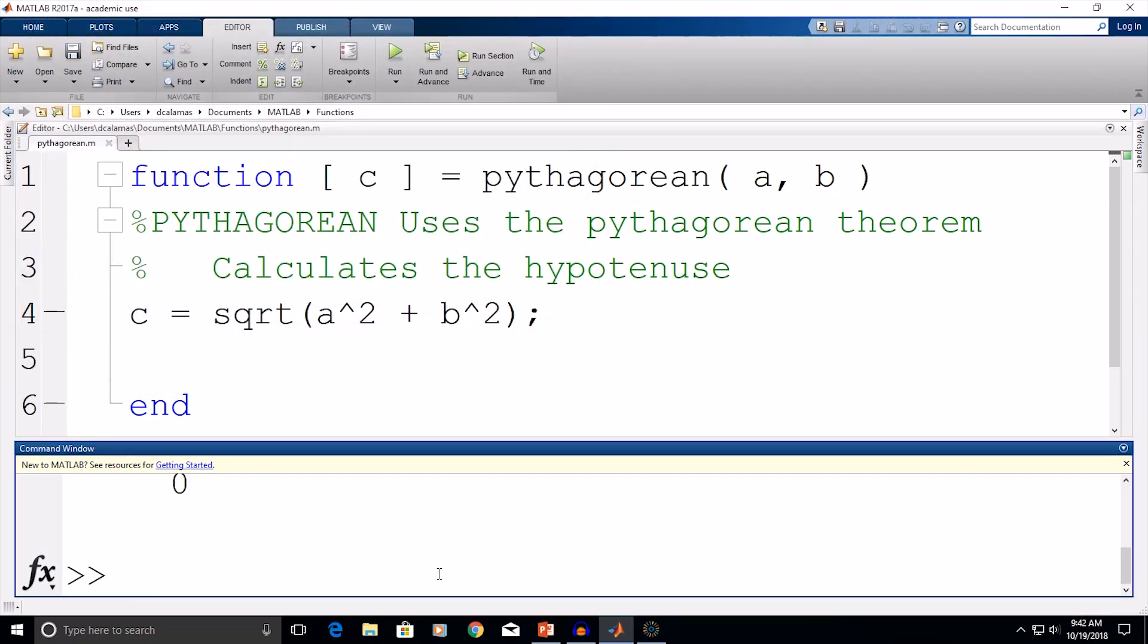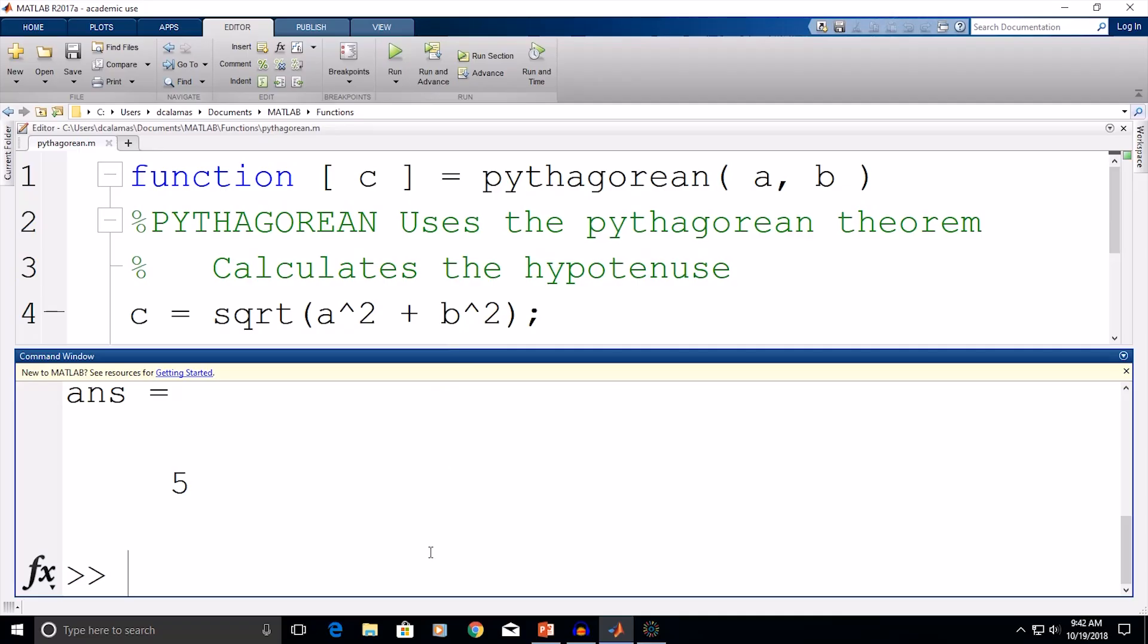So now what I want to do is I want to be able to calculate the hypotenuse based on two given side lengths. So this is how we would call the function in the command window. You would type in the function name, and then you enter in your two inputs, A and B. So let's say side length of A is 3, and the side length of side B is 4. And I'm going to click enter here, and I get a value of 5, which is what I'm expecting based on the Pythagorean theorem, so this is correct.